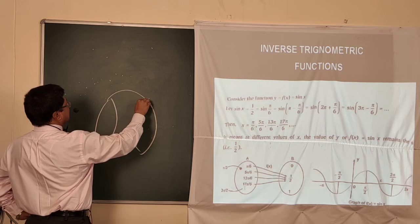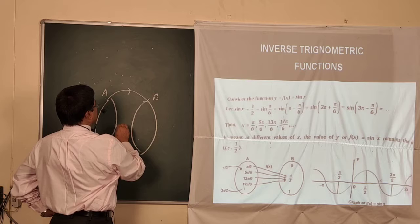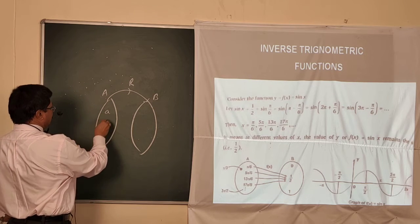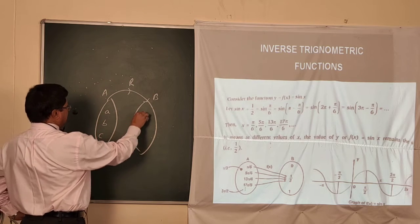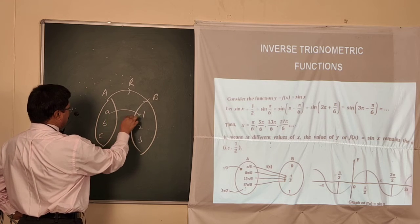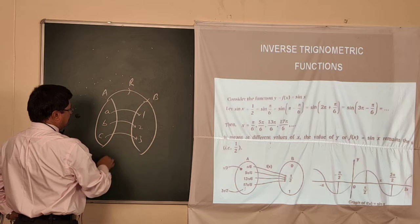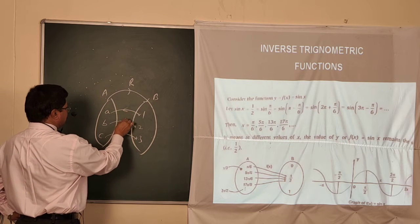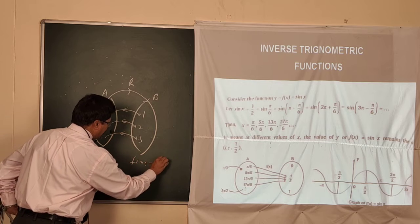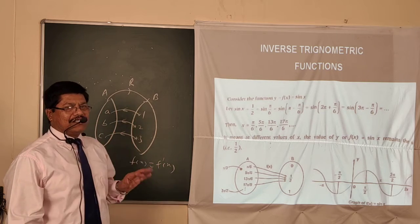Suppose set A is related to set B by relation R, and the members of A are a, b, c and B is 1, 2, 3. The image of A is 1, image of B is 2, image of C is 3. Then you can write down the reverse relation — this is your inverse function, where f(x) equals f inverse of x.